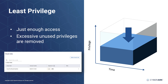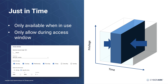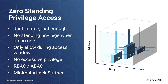On the other hand, just-in-time provides real-time elevation of privileges for both human and non-human users to perform necessary tasks in an application or system. This approach offers elevated and granular privileged access, but only when needed during a pre-approved access window. The permission is removed when no longer required. Zero standing privilege access builds upon all the controls described, in addition to utilizing role-based or attribute-based access control from the cloud service providers. This approach minimizes the attack surface while maintaining productivity at the same time.